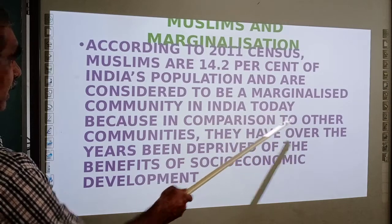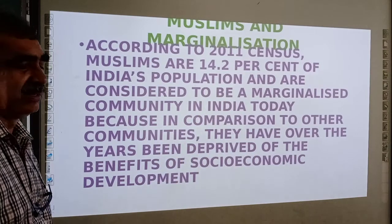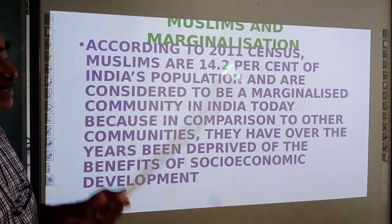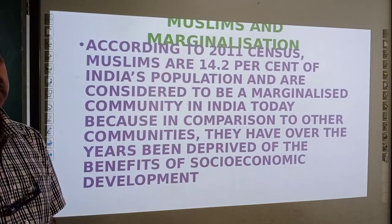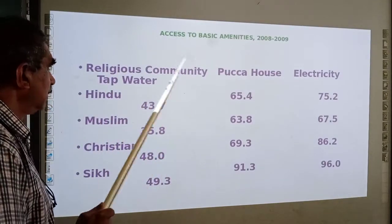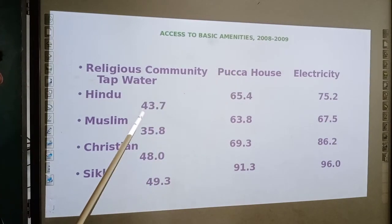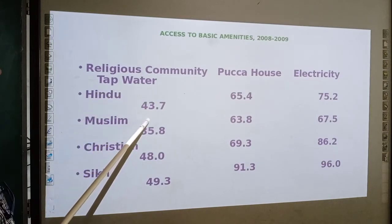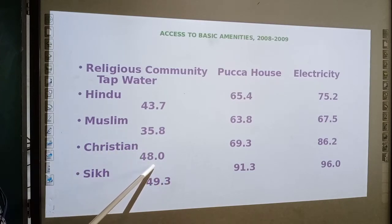Over the years, the Muslim community has been deprived of the benefits of socio-economic development. According to 2011 census data, looking at housing: 43 percent of the Hindu community are in pucca houses, Muslims 35 percent, Christians 48 percent, and Sikhs 49 percent. When it comes to electricity, 65 percent of the Hindu community have access, the Muslim community 63 percent, Christians 69 percent.